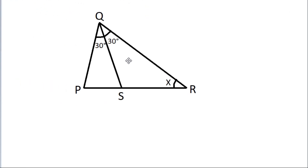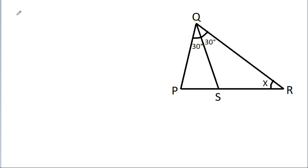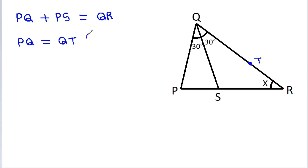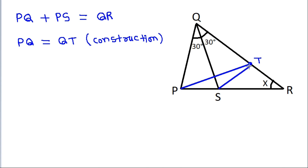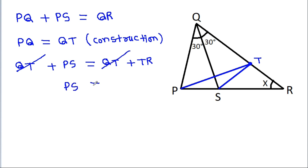This is the triangle and we have pq plus ps is equal to qr. Suppose this point is T such that pq is equal to qt — this is our construction. If we join pt and st, then pq plus ps equals qt plus ps, and qr equals qt plus tr. Qt will get cancelled, so ps is equal to tr.